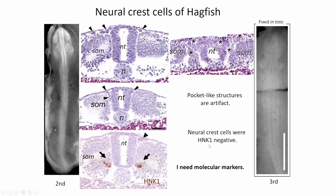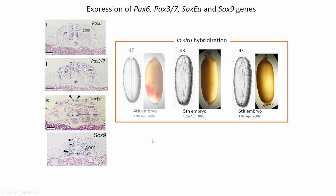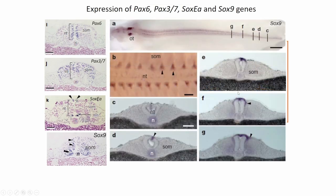Neural crest cells staining HNK1-negative — this means I need a molecular marker. But I only had a limited number of embryos. I then analyzed gene expression patterns: PAX6 in the neural tube, PAX3/7 in the dorsal body. SOX9 genes are expressed in migratory neural crest cells. The image wasn't great, but using a single embryo I succeeded in getting an image of SOX9 expression.